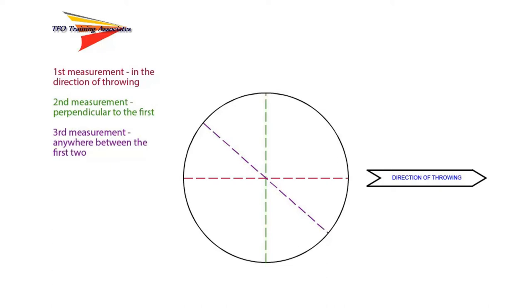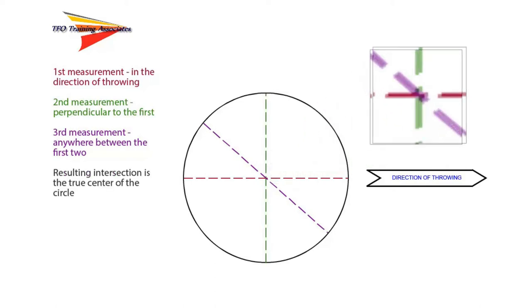Take a third measurement anywhere between the first two. This will help you determine how out of round the circle may or may not be. If it is a true circle, the three points will overlap. If it is not, then you'll need to determine a point that is closest to where the three lines intersect and use that as the circle center.